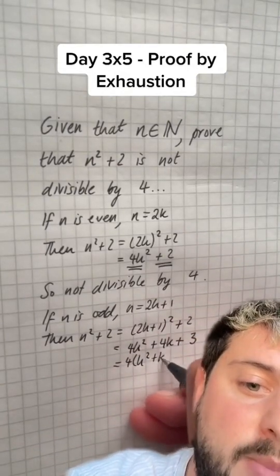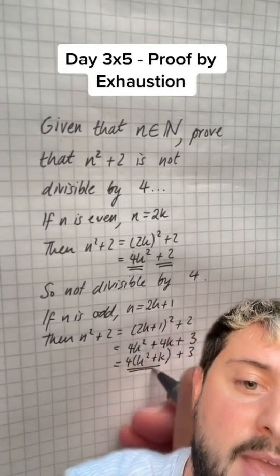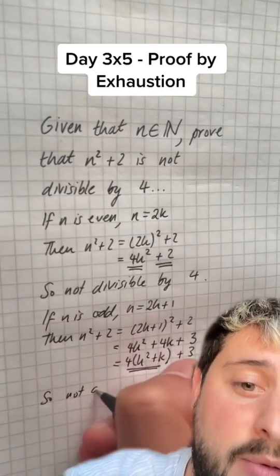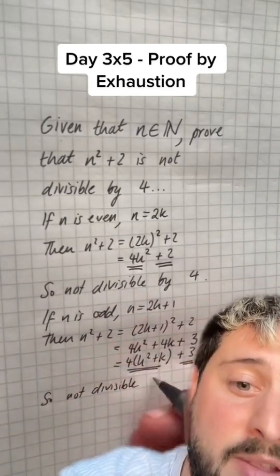Now I can factorise those first two bits so that I get 4 brackets k squared plus k plus 3. The first bit must be a multiple of 4 because it's being multiplied by 4, but then we're adding 3 to it, so it's no longer divisible by 4.